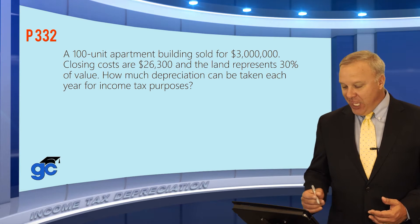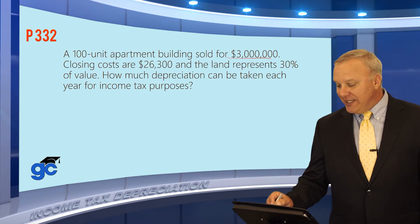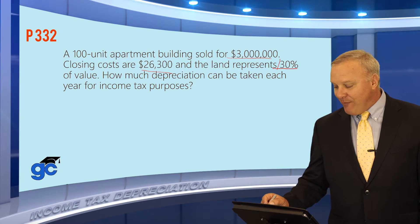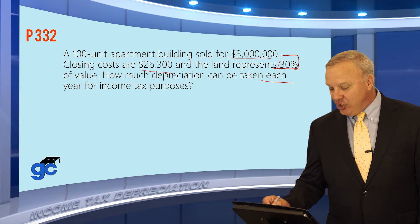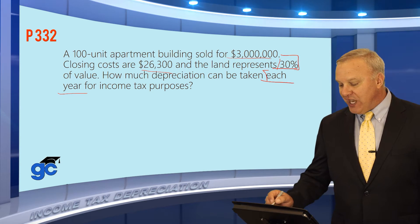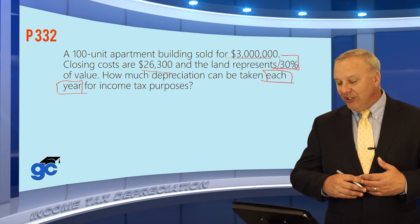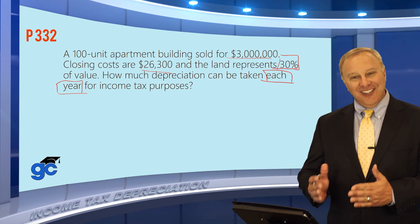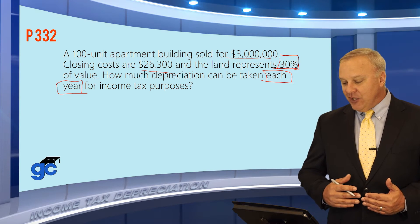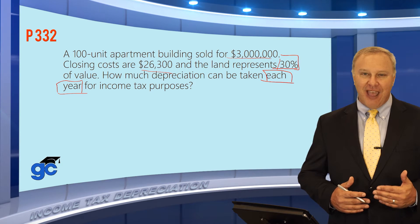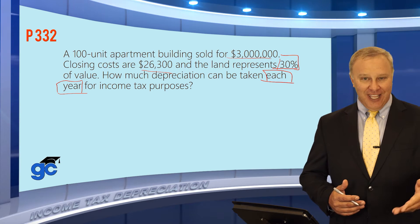Let's take a look at a question. A 100-unit apartment building sold for three million dollars. Closing costs are twenty-six thousand three hundred dollars and the land represents thirty percent of the value. The question is how much depreciation can be taken each year for income tax purposes. Note that some questions may ask you to calculate depreciation over a certain number of years, but this one asks for each year. One key concept: the land cannot be depreciated, so we're only depreciating the building and the expenses incurred in purchasing it.